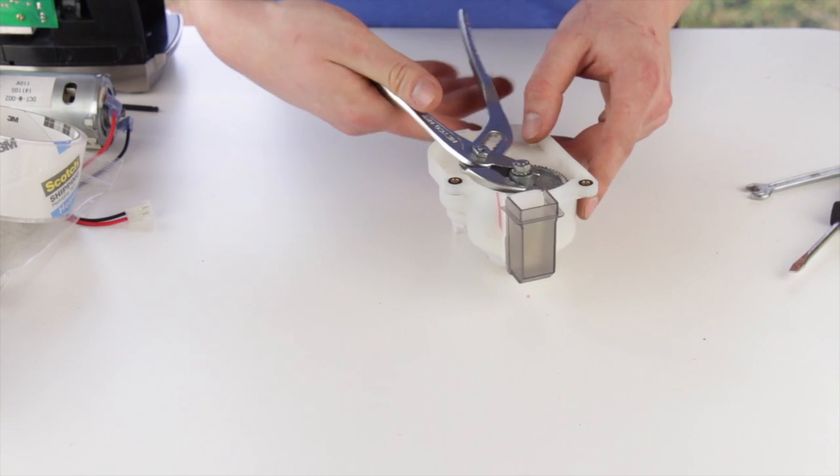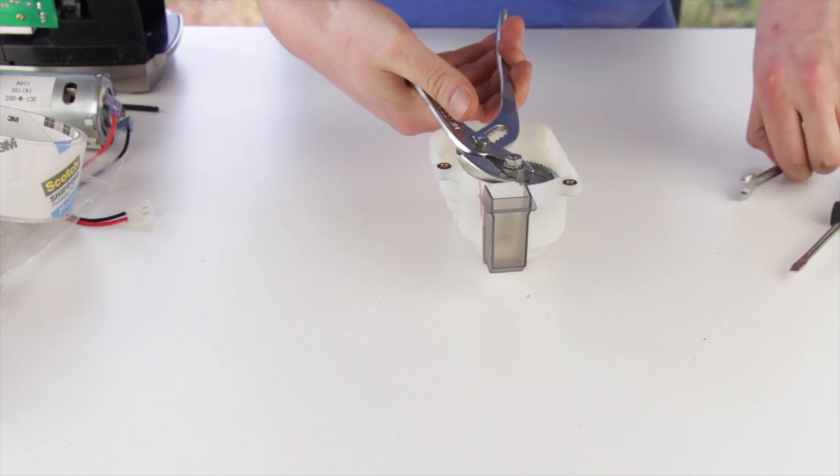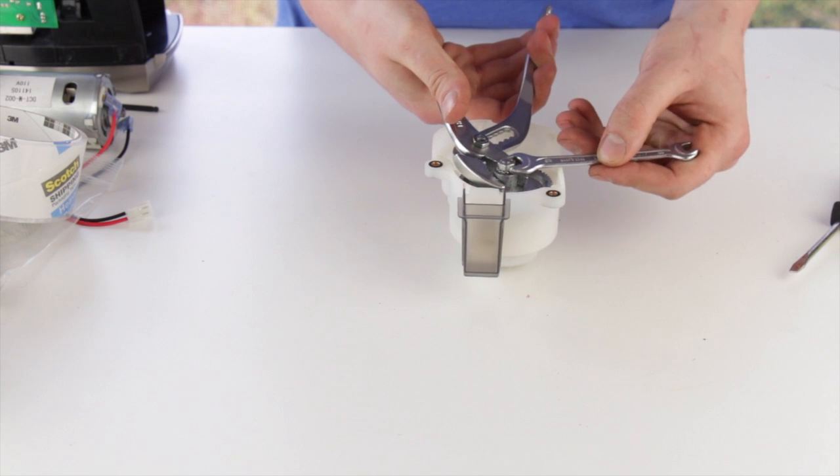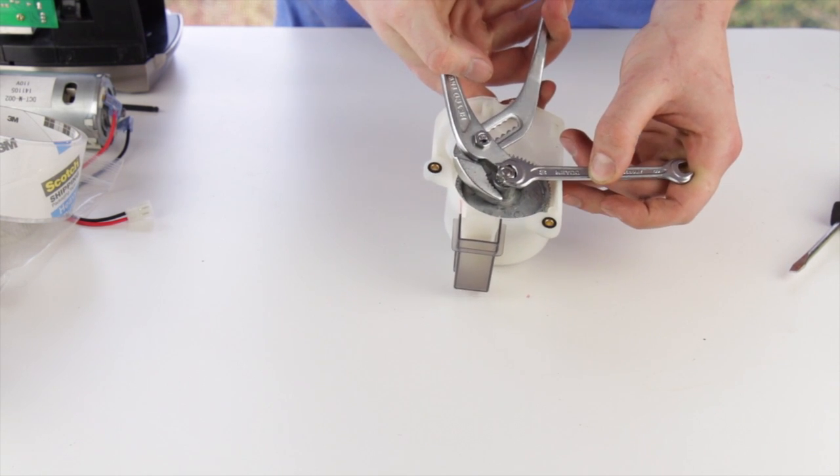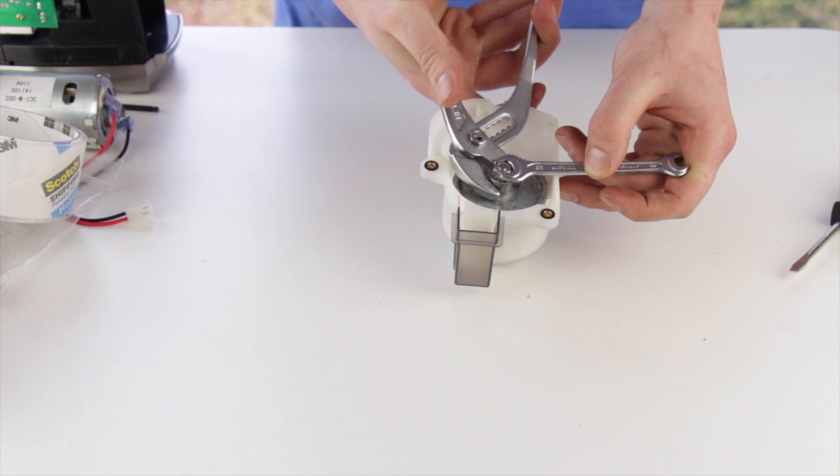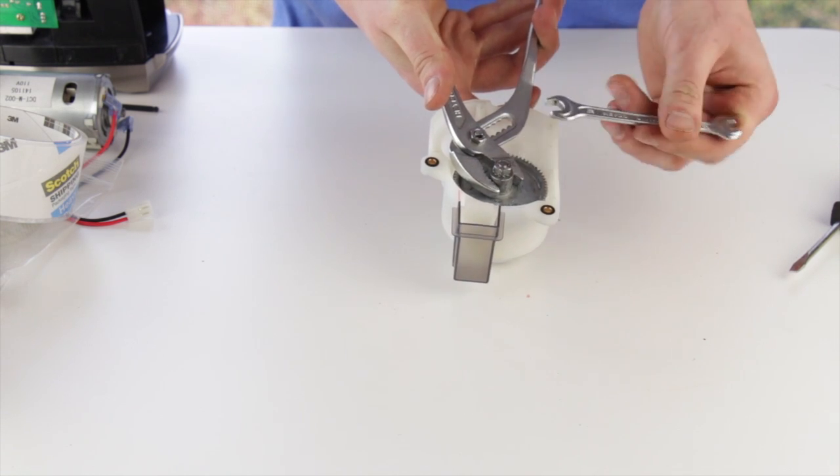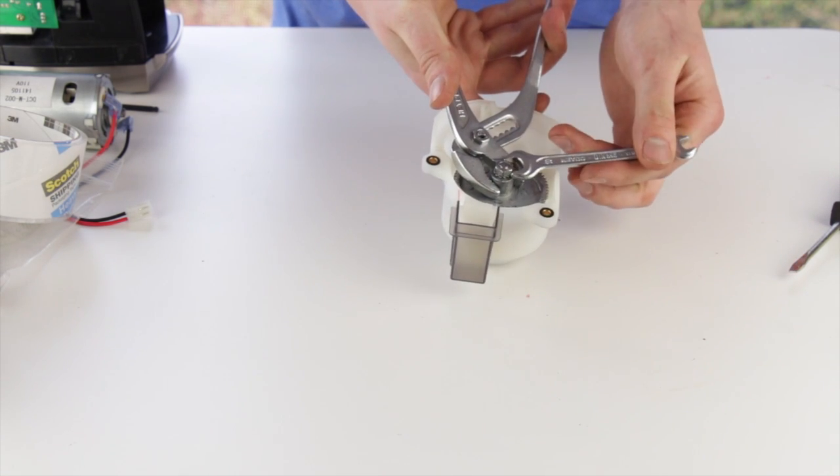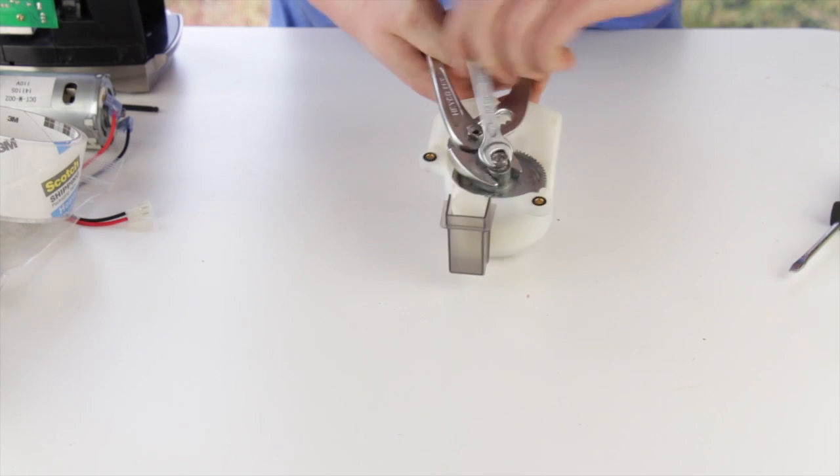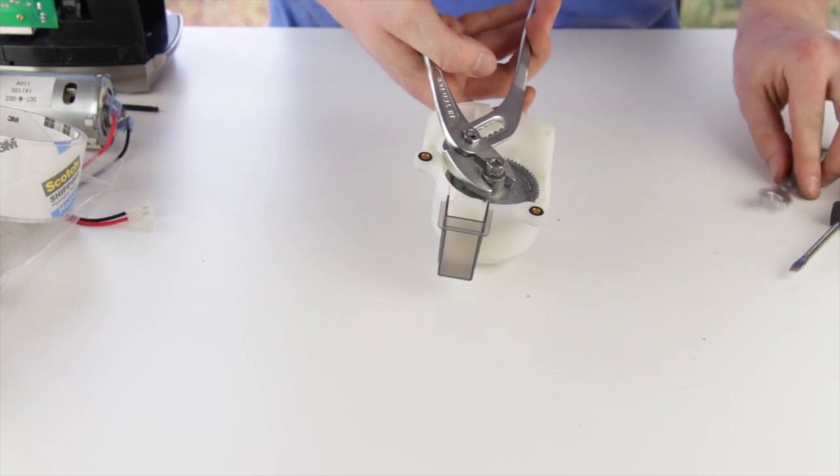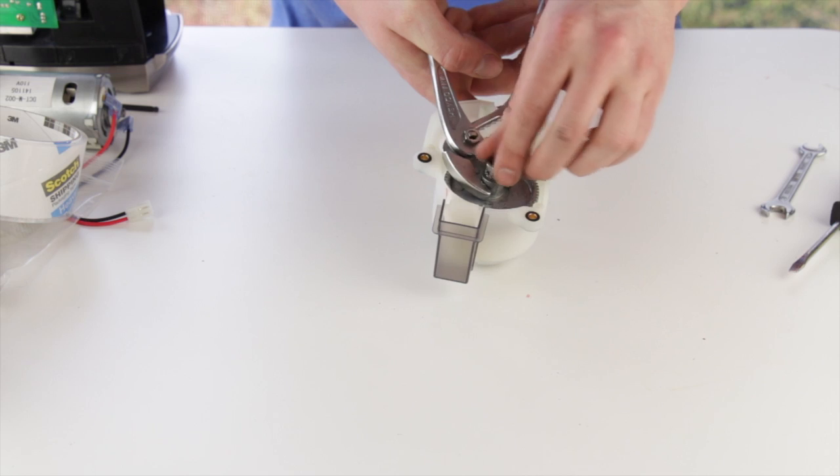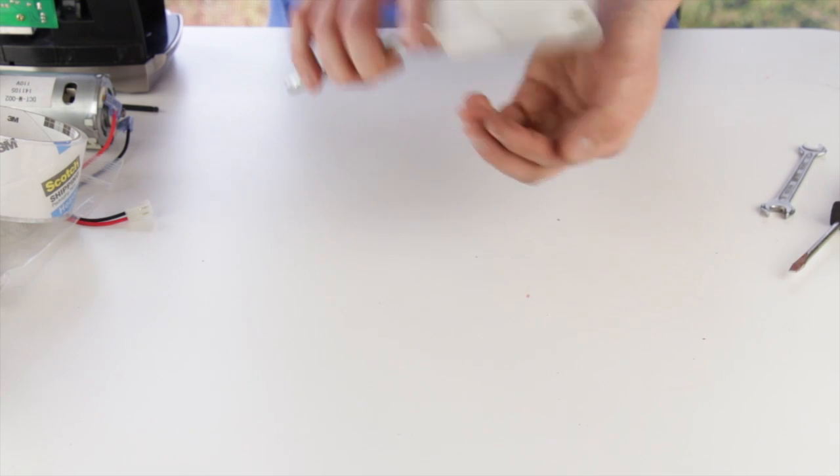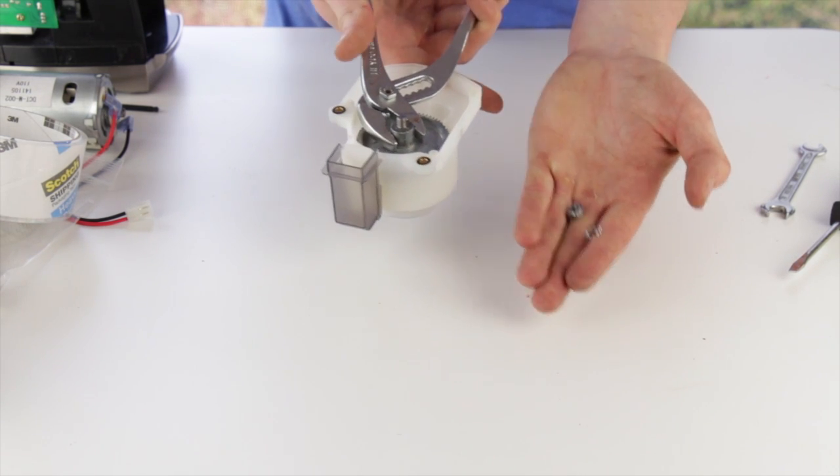Use pliers to hold onto the stem of the gear and your 10 millimeter wrench to loosen the nut. The 10 millimeter nut is a left hand or a reverse thread. You must rotate it clockwise to loosen. We can go ahead and discard the 10 millimeter nut and its lock washer.